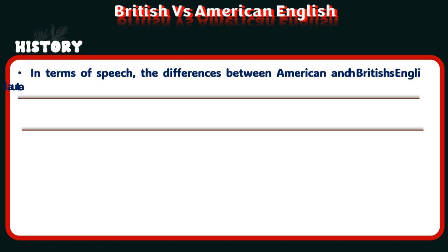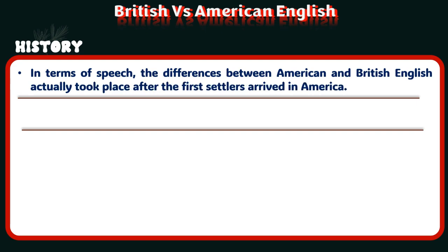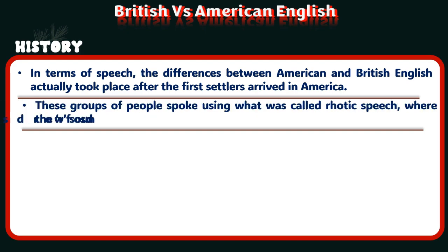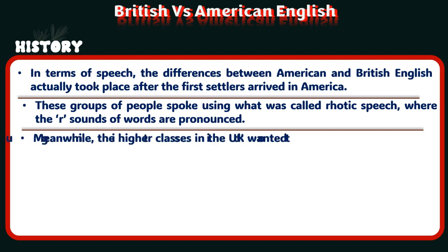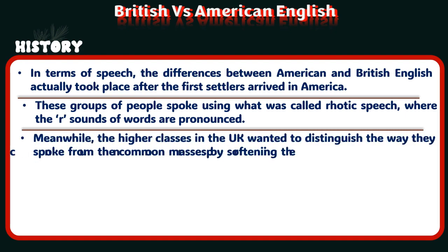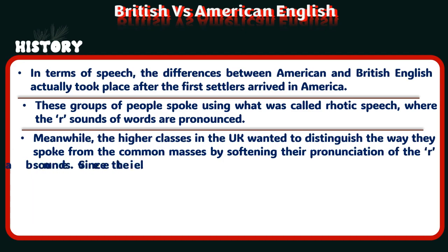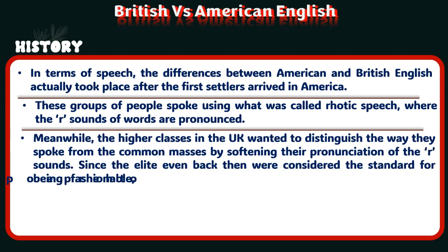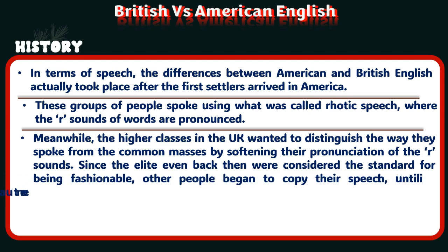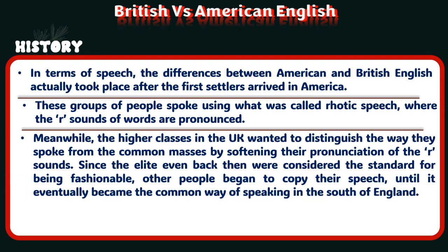In terms of speech, the differences between American and British English actually took place after the first settlers arrived in America. These groups of people spoke using what was called rhotic speech, where the r sounds of words are pronounced. Meanwhile, the higher classes in the UK wanted to distinguish the way they spoke from the common masses by softening their pronunciation of the r sounds. Since the elite even back then were considered the standard for being fashionable, other people began to copy their speech, until it eventually became the common way of speaking in the south of England.